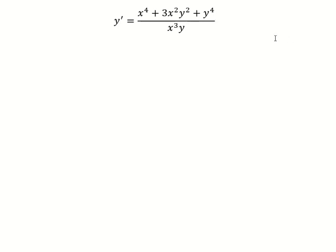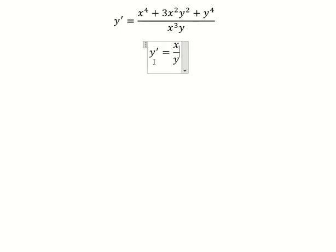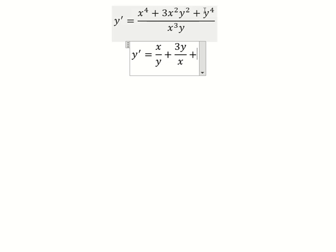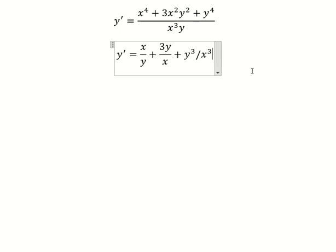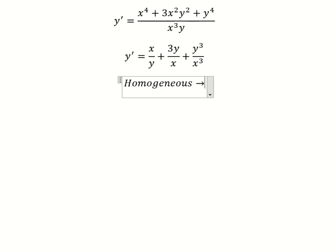Hello everybody, today I want to show you how to answer this one. So this one divide by this one, so you have s over y. This one divide by this one, so you have s in here, y squared divide by y, so we have y in here. This one we have y to the power of 3 over s to the power of 3. Next we have y over s, so that is about homogeneous, so I will put y equals to vs.